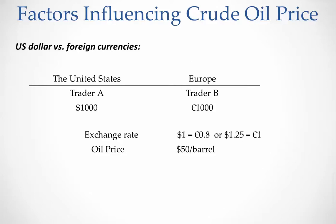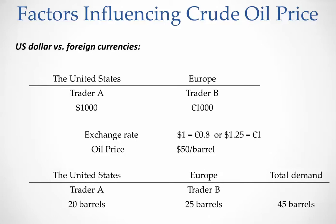Trader A still has $1,000 and the crude oil price is still $50 per barrel, so trader A inside the United States can still get 20 barrels of crude oil. For trader B: trader B has €1,000 and has to exchange that to the equivalent dollars. Because the dollar has lost its value, €1,000 will be converted to $1,250 — since with one euro, trader B gets $1.25. So trader B now has $1,250.